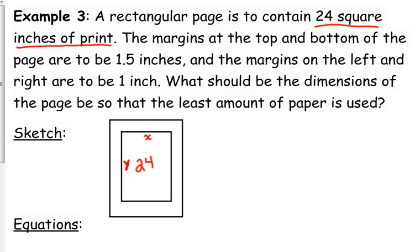The margins at the top and the bottom are 1.5. The left and the right are 1. But we want to find the least amount of paper. That is what we're trying to optimize. We're trying to optimize the area of the whole page, not just the text, but the entire thing. So that's why the margins have a play in this.